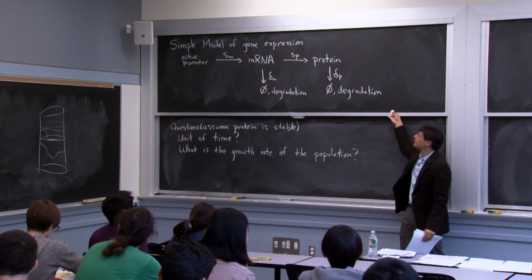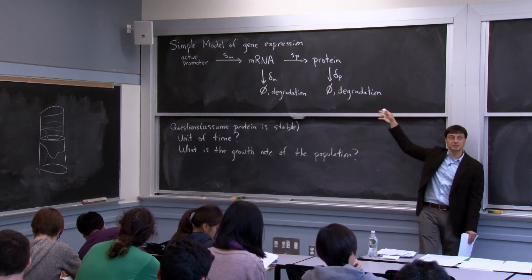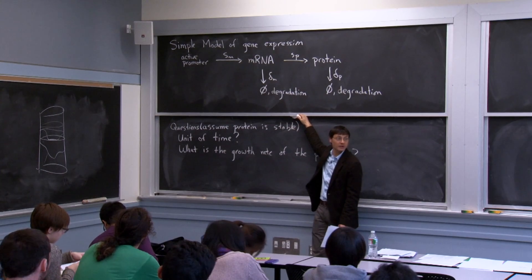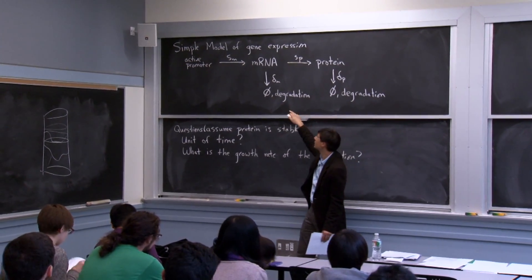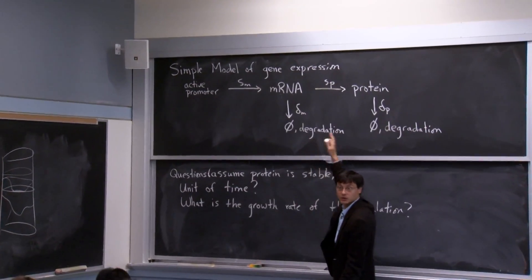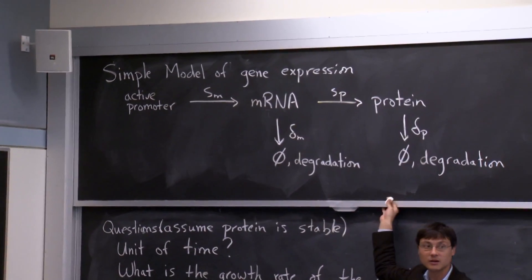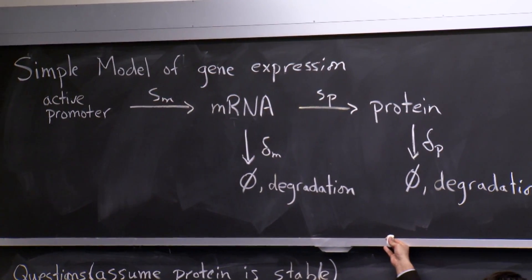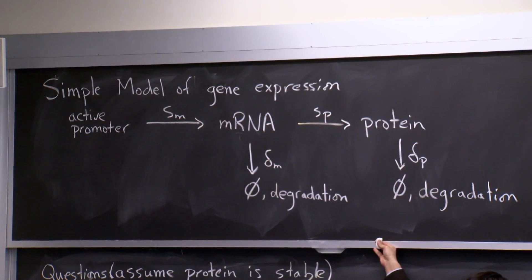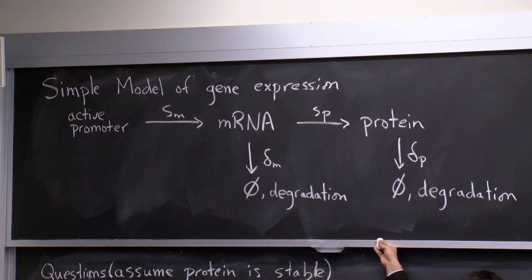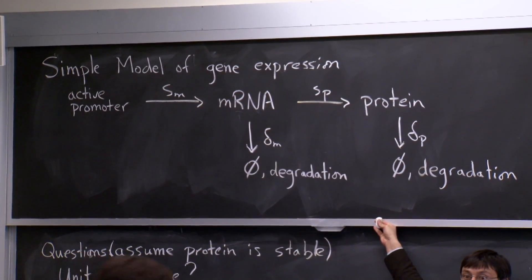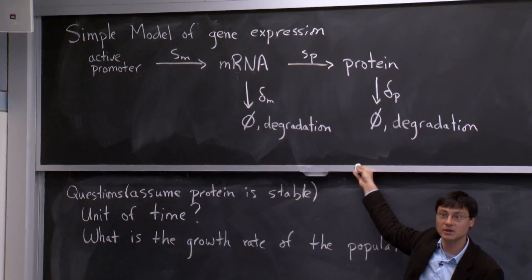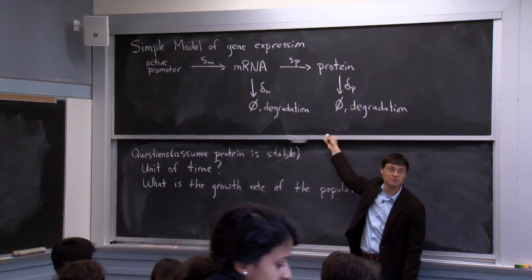Our goal for today is to basically analyze this simple model to death. We're first going to try to understand the deterministic behavior of this model of gene expression, where we just get transcription of mRNA and then translation of protein. After we understand the mean behavior, the deterministic dynamics, then we will try to understand the stochastic behavior in this model. We're going to try to understand what's the distribution of mRNA in a cell in this simple situation, what's the distribution of protein, and what's going to be the bursting behavior.